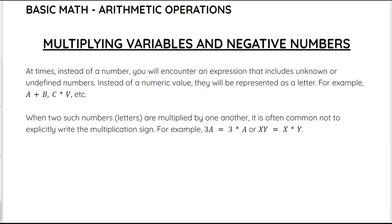When two such numbers — and again we use letters to represent those numbers — are multiplied by one another, it is often common not to actually write the multiplication sign. So for example, 3 times a we typically write as 3a, or x times y we write as xy.